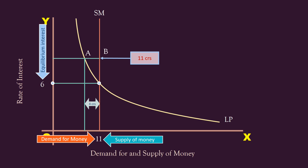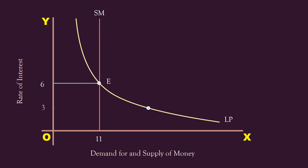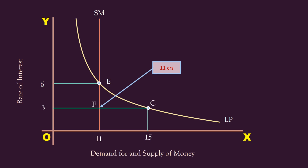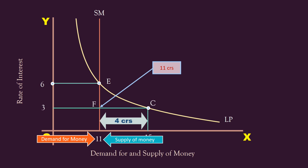The demand for money balances itself against the supply, restoring the equilibrium rate of six percent. At times the market rate may fall to three percent. At this rate, liquidity preference or demand for money is 15 crores, but supply is 11 crores — an excess demand of four crores. Since interest rates are low, bond prices are high, so people start selling bonds. As bond prices fall, the interest rate rises, demand for money becomes equal to supply, and the original equilibrium E is re-established.